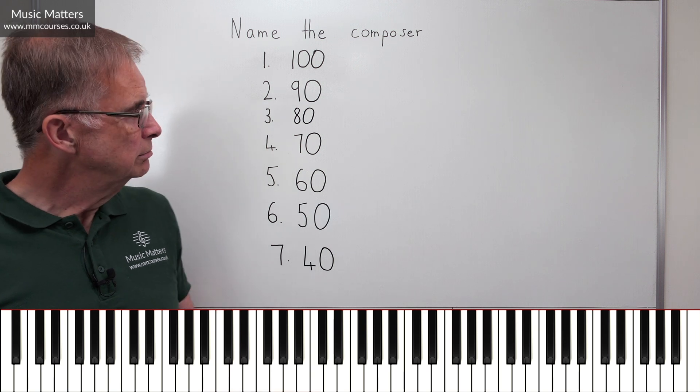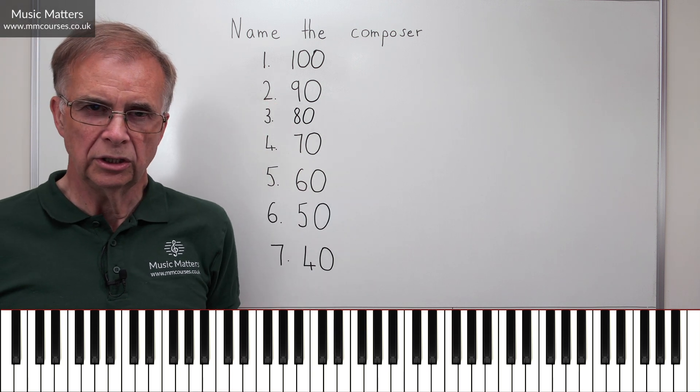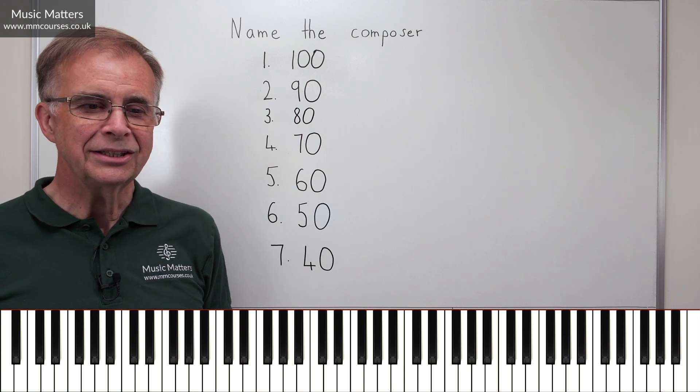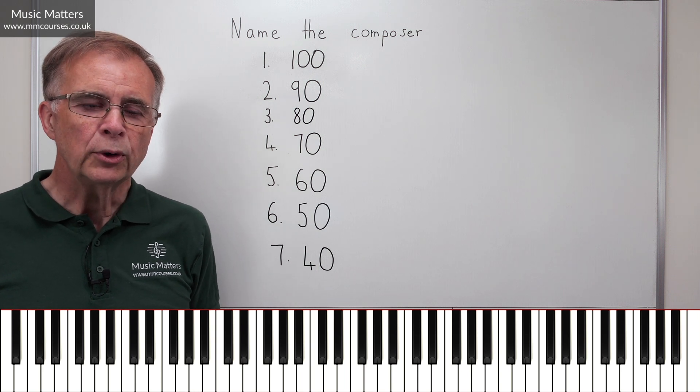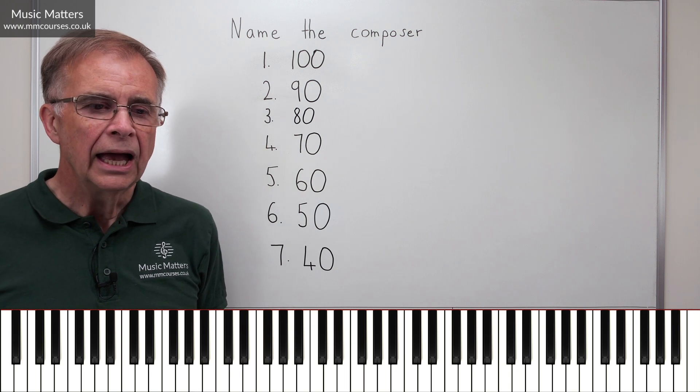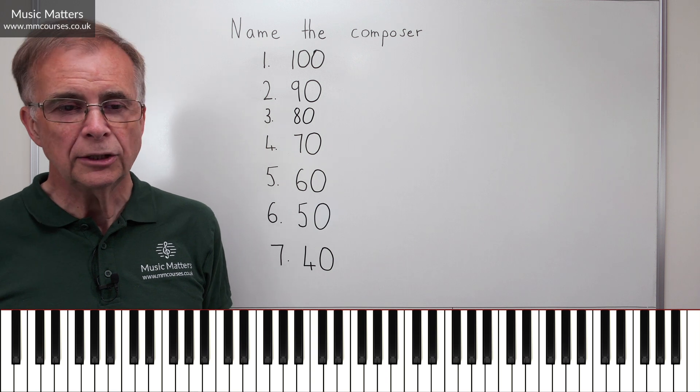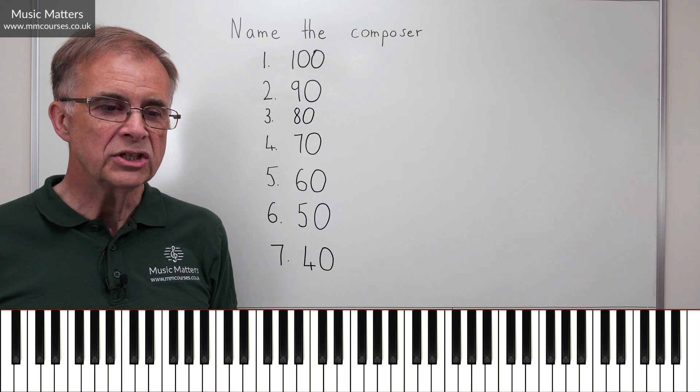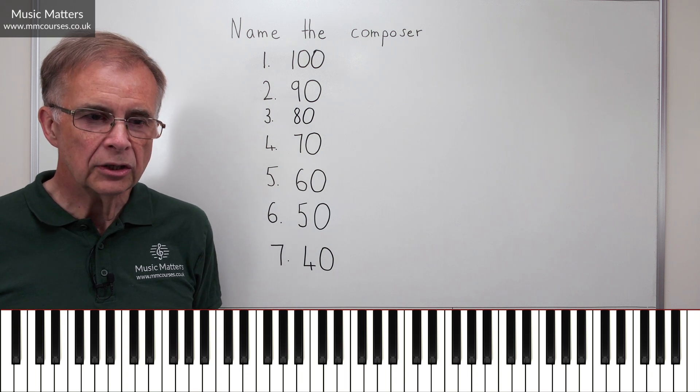Clue number two, still worth a good old 90 points. In 1832, I was appointed organist at Hereford Cathedral, and my subsequent appointments included periods as organist at Exeter, Winchester and Gloucester.